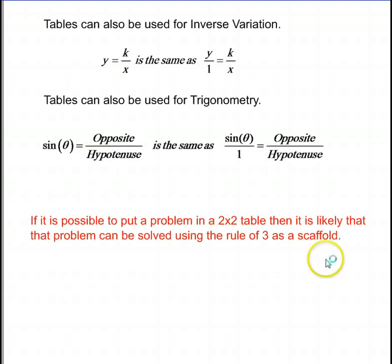Tables can also be used for inverse variation. So here y equals k over x. We see y over 1 equals k over x. So x equals k times 1 divided by y, so that's k over y. k equals y times x divided by 1.